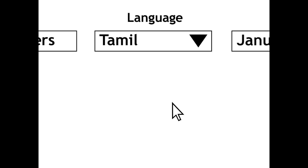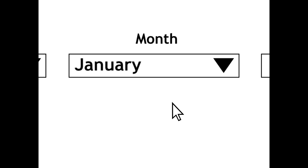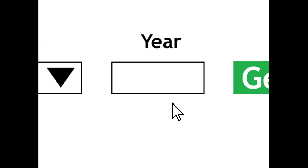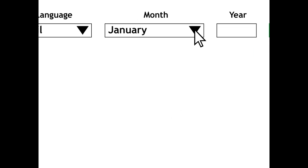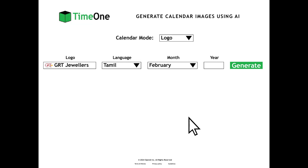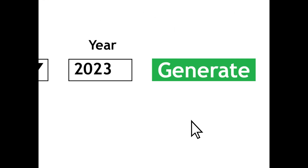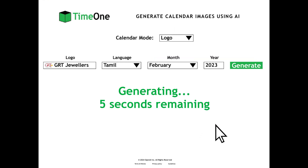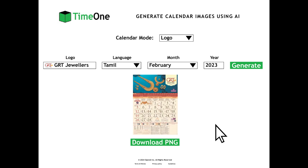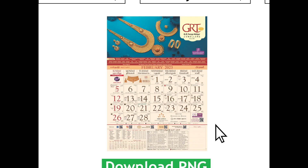After you choose your logo and language for your advertising calendar, you will then choose the month from the month drop-down list and enter the year in the year search field. For example, I choose February from the month drop-down list and enter 2023 in the year search field. Then you click generate, which takes 5 seconds. And voila! Your calendar image is ready — showing February 2023.